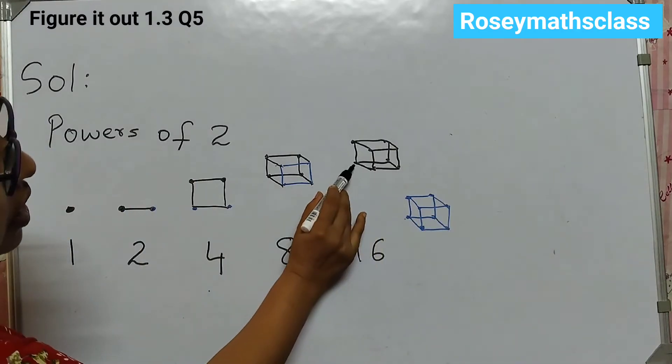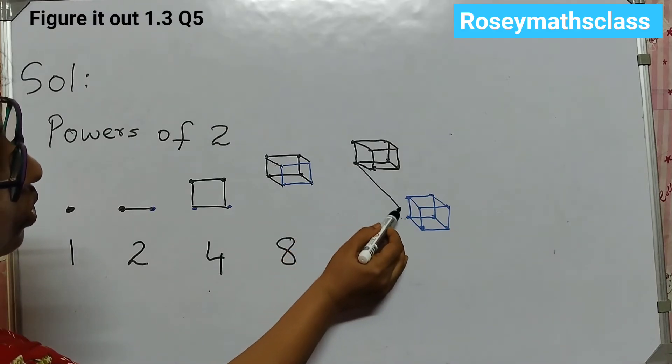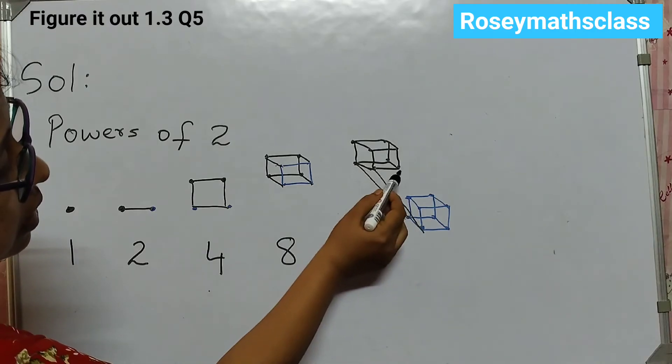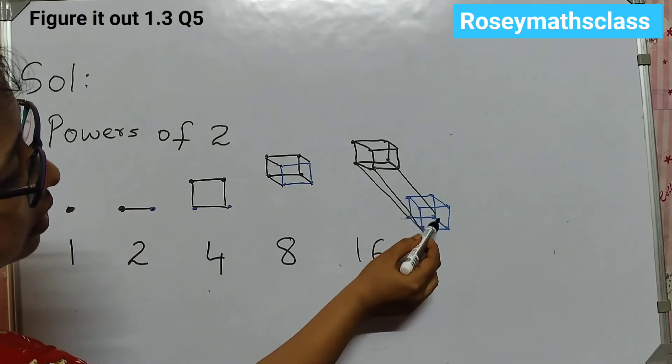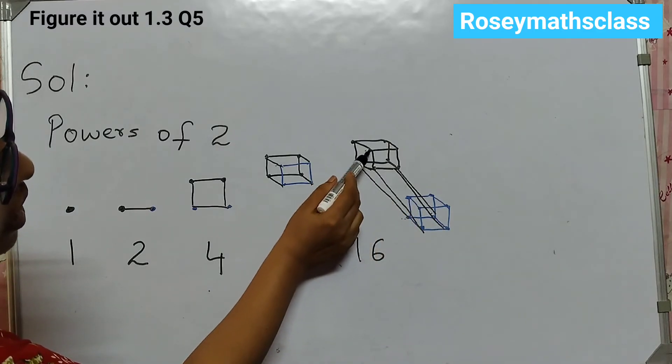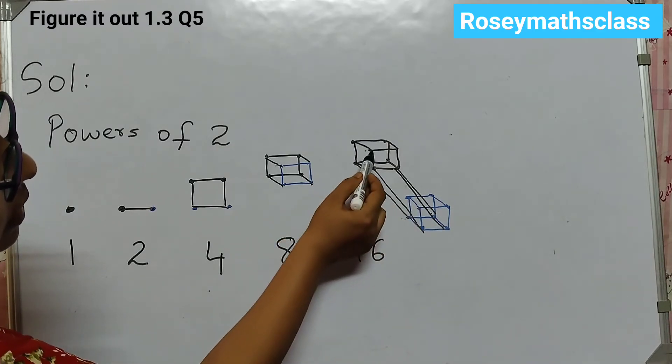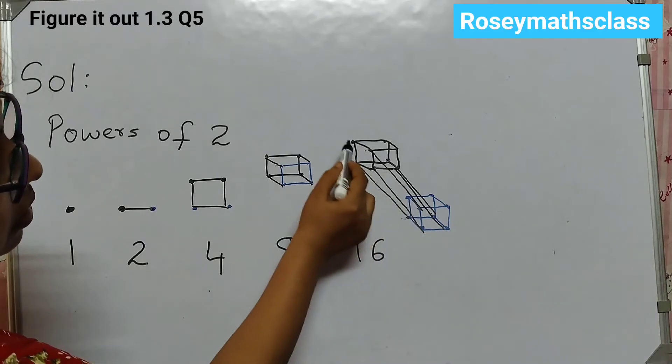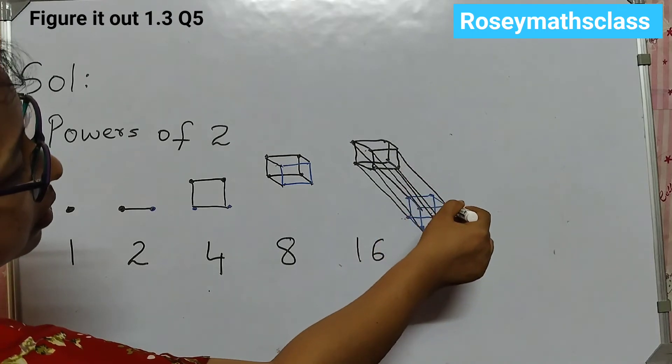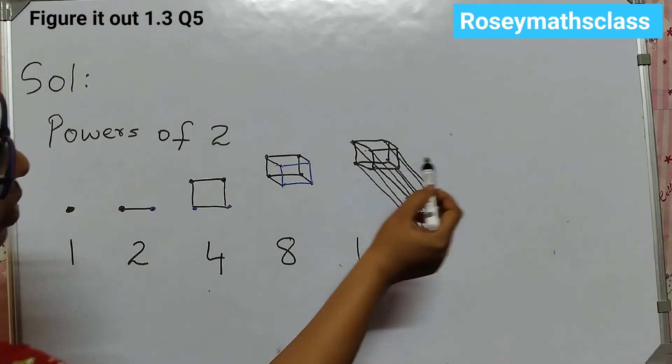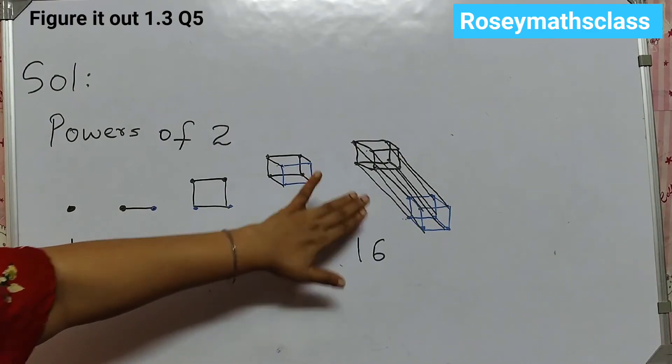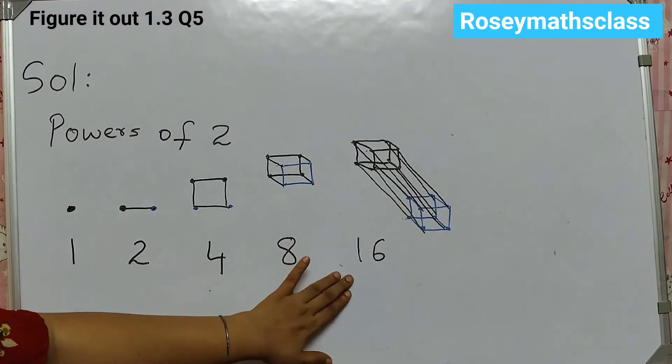Again, you can join this point to this. Use a scale to do it. So that it looks neat. And this one to this. This one will go with this. This one will go with this. Similarly, you have to join these points. This one will go with this. These will be all patterned lines. When you do it properly. This is looking little messy here. So when you do it on paper, it will be neat. Okay. This is for 16 dots.